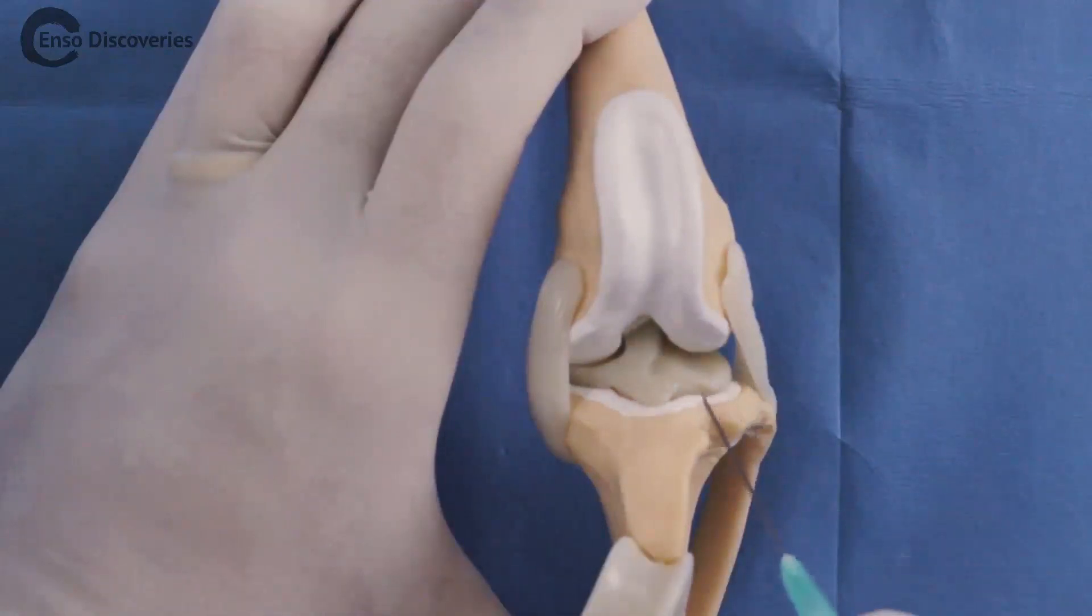Take care, especially with small animals, to avoid injecting through the back of the joint. Aiming proximally should avoid this.